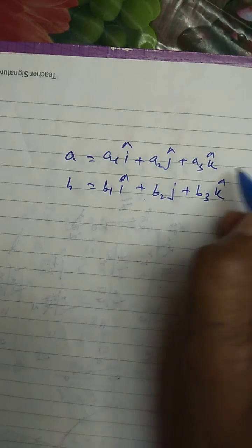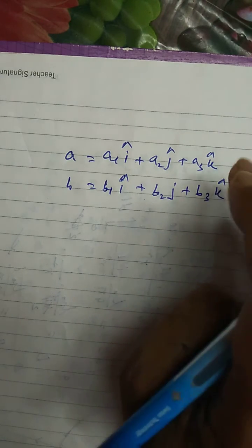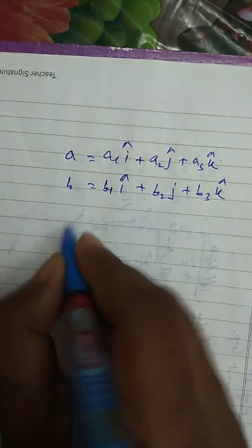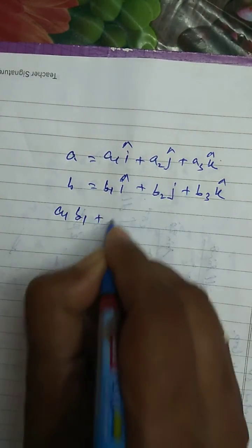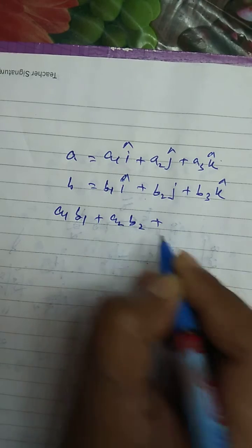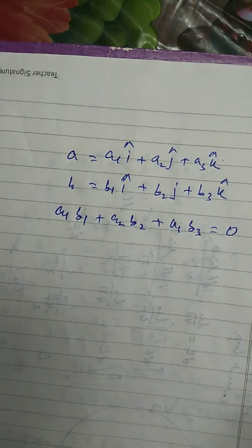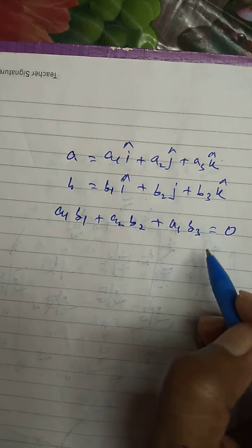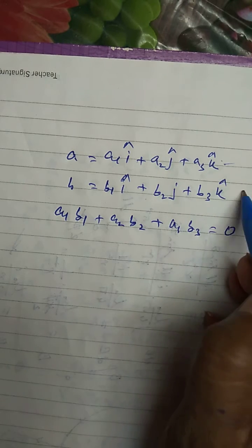Then the condition of perpendicularity: if two vectors are perpendicular, then a1b1 plus a2b2 plus a3b3 must be equal to 0. If this happens, we can say that this vector is perpendicular to this vector.